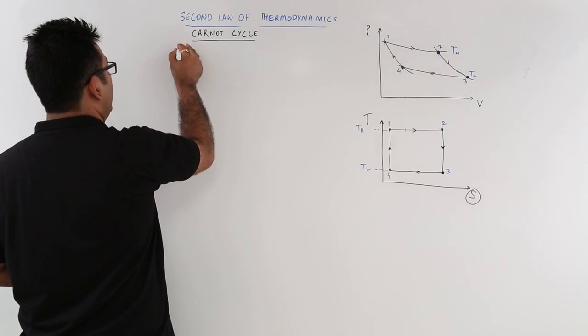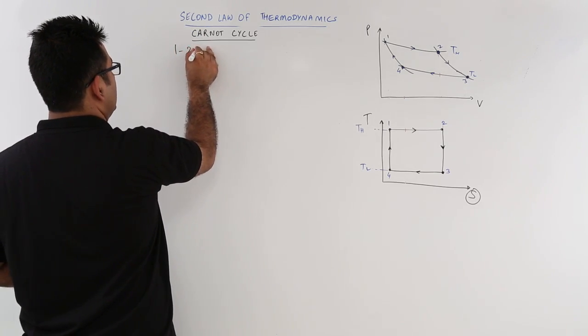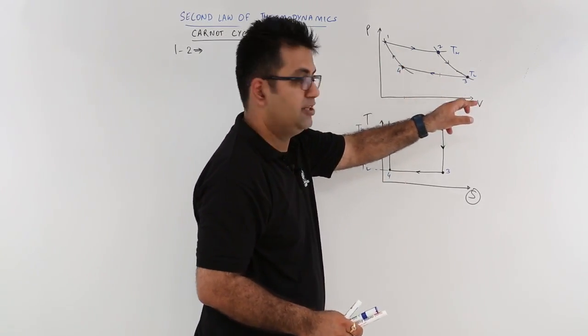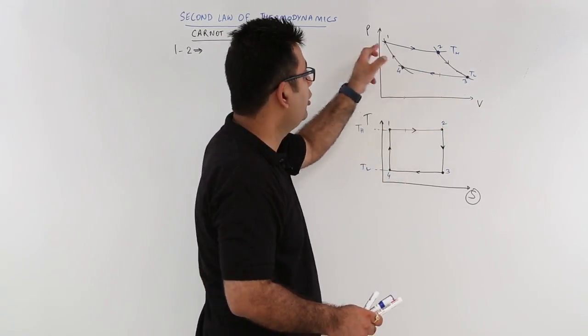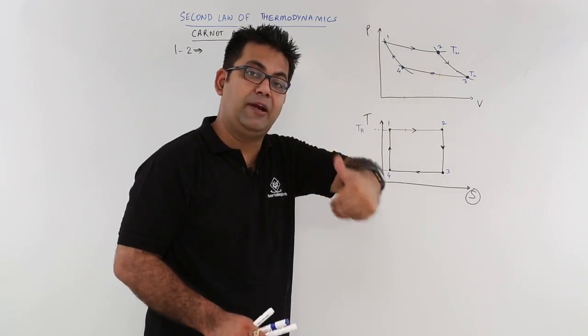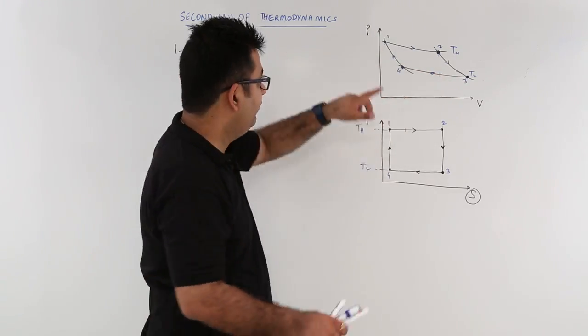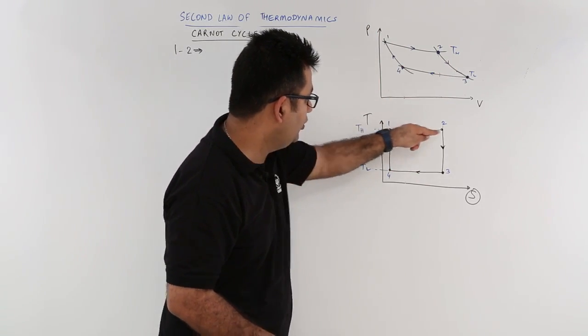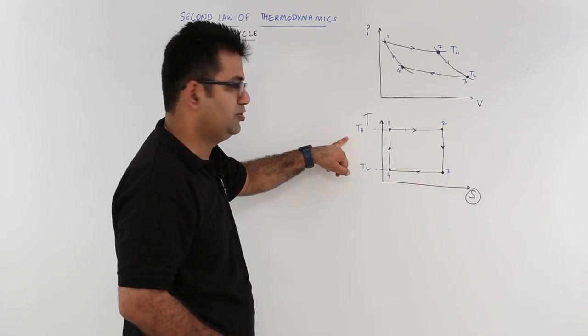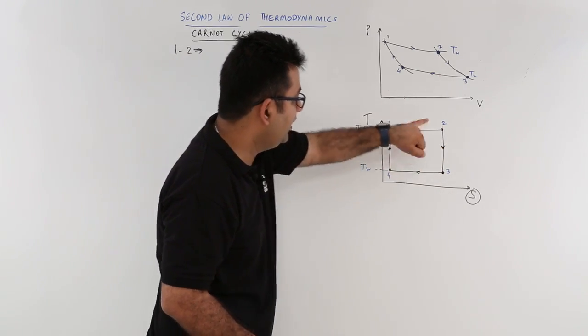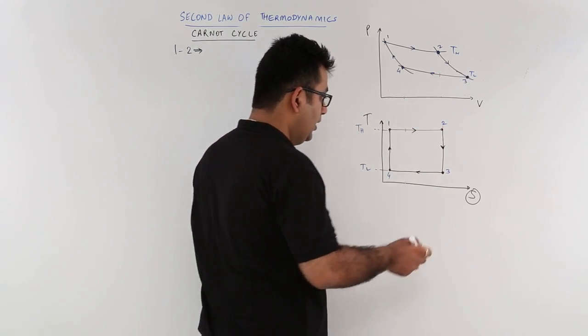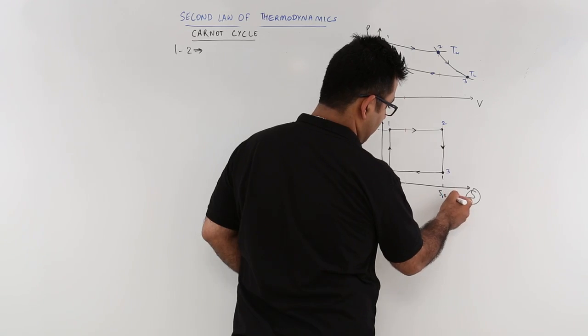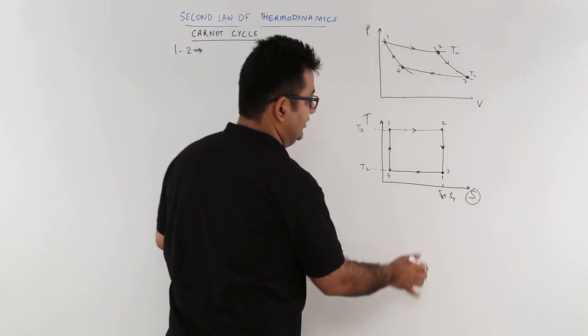So the first process is 1 to 2. If you look at 1 to 2 and compare it with 2 to 3, the slope of 2 to 3 is higher compared to 1 to 2. So 2 to 3 is an adiabatic process and 1 to 2 is an isothermal. If you correlate this with the T-S plot, 1 to 2 is a horizontal line which shows it is at constant temperature. And 2 to 3 is a vertical line which means it is at constant entropy. So this is an isentropic process. S2 is equal to S3.